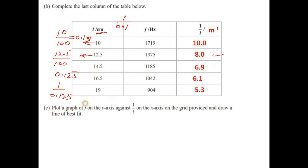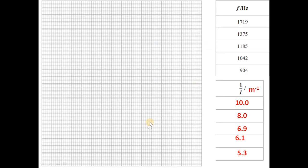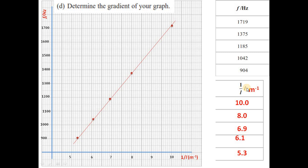Plot the graph of f on the y-axis against 1 upon l on the x-axis on the grid provided and draw a line of best fit. Remember you choose scale wisely so that you can cover more than 50 percent of your area. This is frequency in hertz, this is 1 upon l in meter minus 1. These are the points. For 10 you have 1719, for 8 you have 1375, for 6.9, 1185, and so on. And this is the line of best fit.